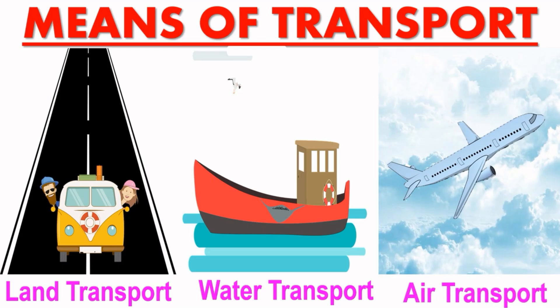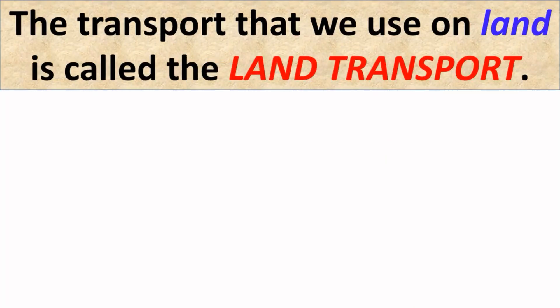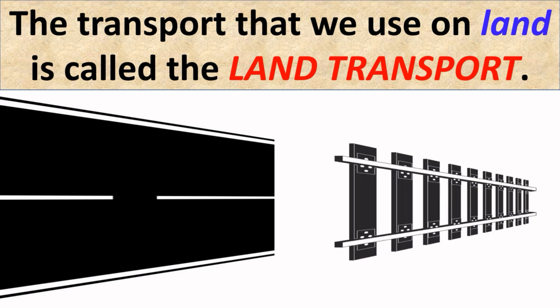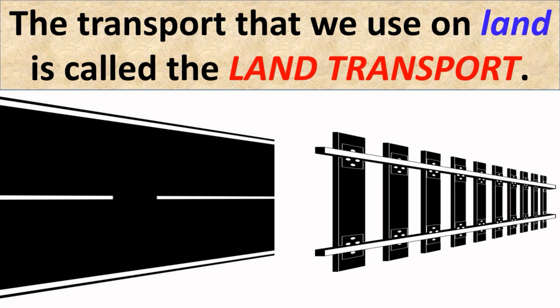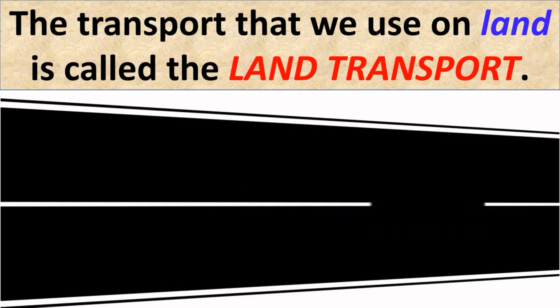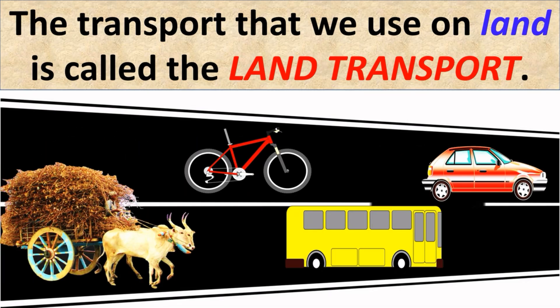Let's have a look at these means of transport in detail. First is land transport. The transport that we use on land is called land transport. On land, we can travel on roads or on the railway tracks. Trains run on railway tracks, while cars, buses, bicycle, and bullock carts move on road — and these are all land transport.